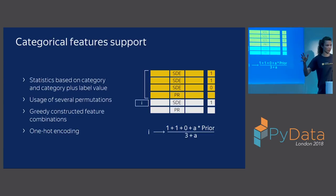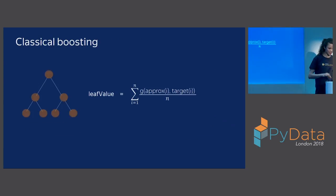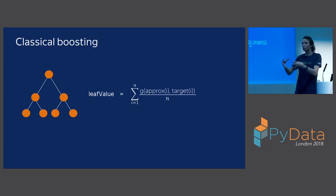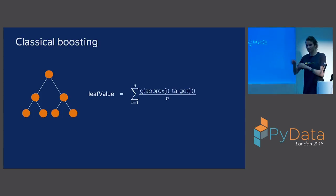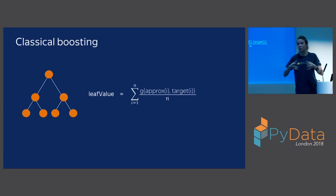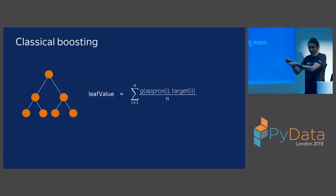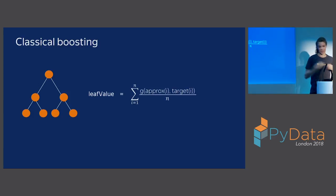The next difference is in the boosting algorithm itself. In classical boosting, the new leaf value is the average of all gradients in that leaf, but this leads to overfitting. The reason is that this average gradient is a biased estimate — you are estimating the gradient for objects using the same model that was built using those same objects. If you estimate the error in the leaf using the same model, the error will appear smaller than it really is. So gradient estimates are biased, and that is the reason for overfitting.